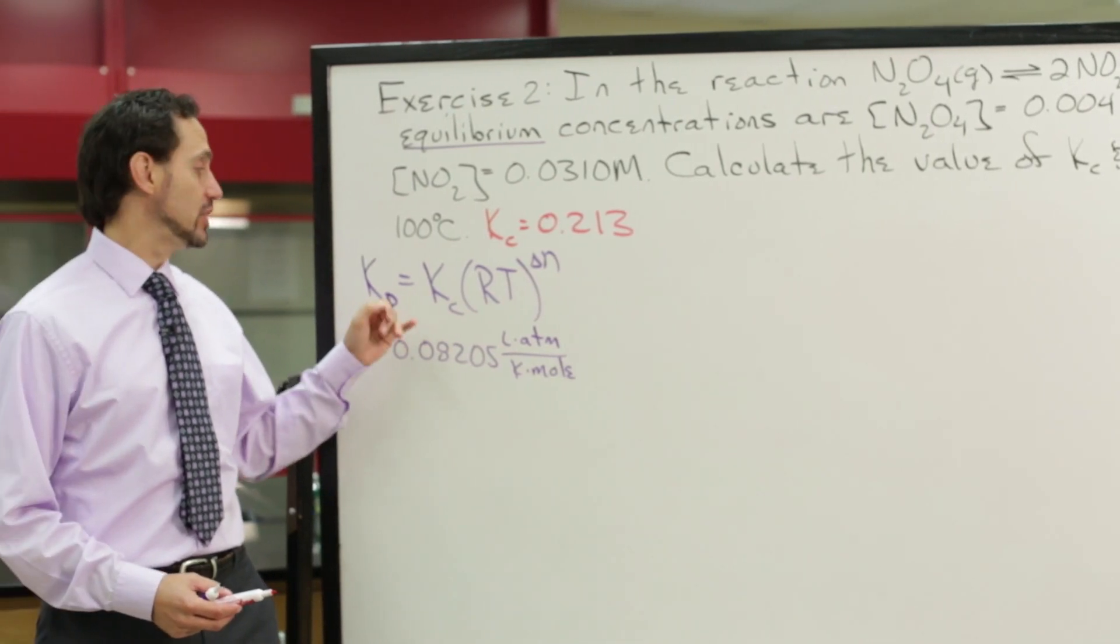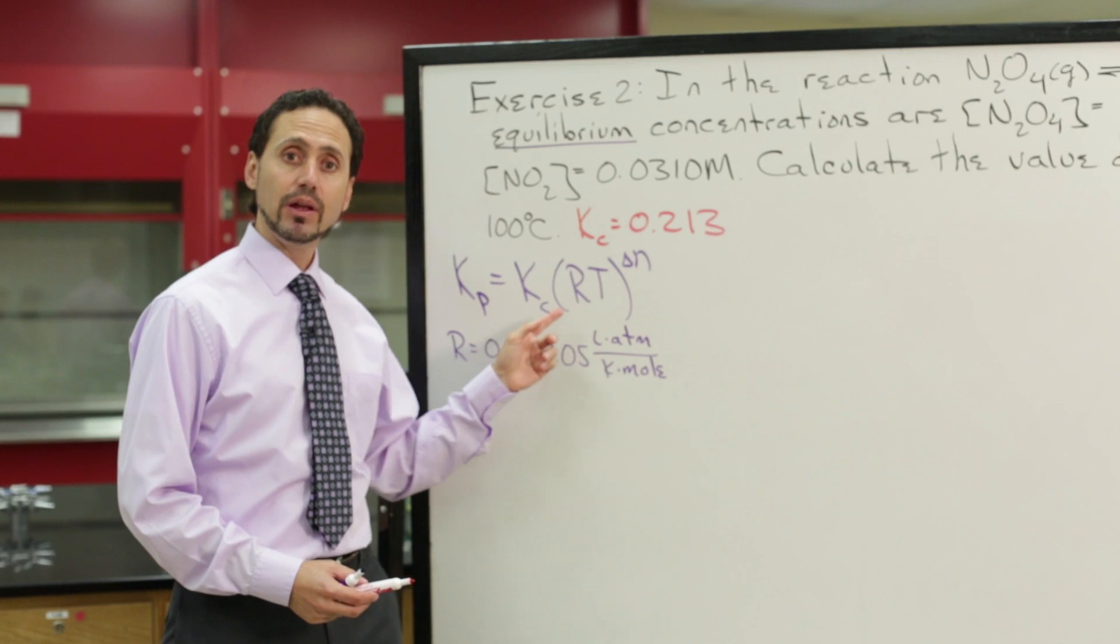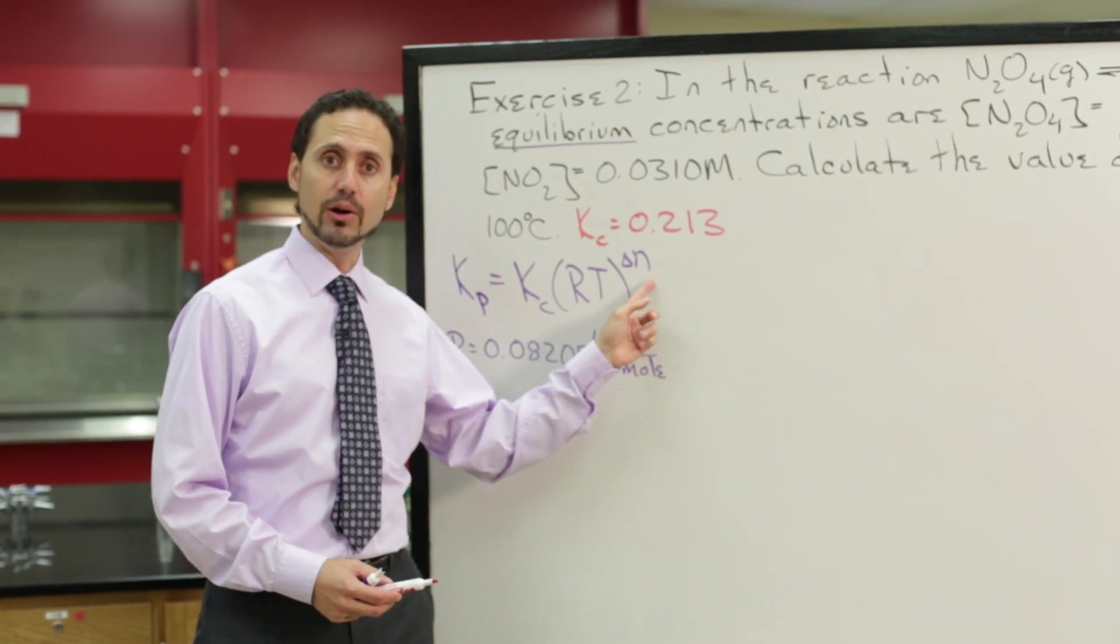Now as we discussed in a previous section, k sub p can be calculated by taking k sub c times RT raised to the delta n power.